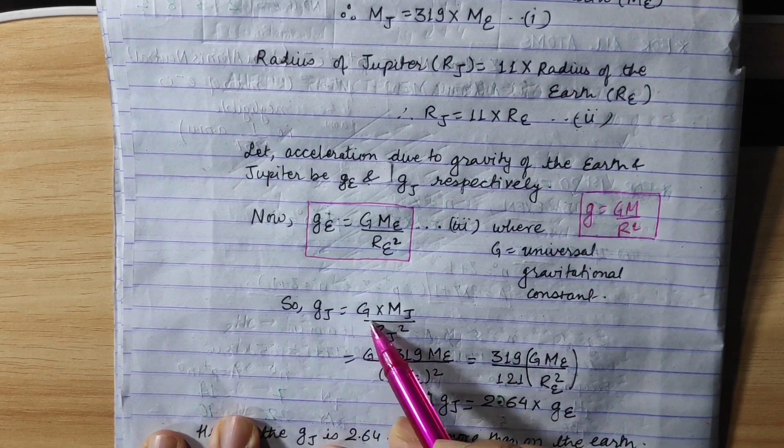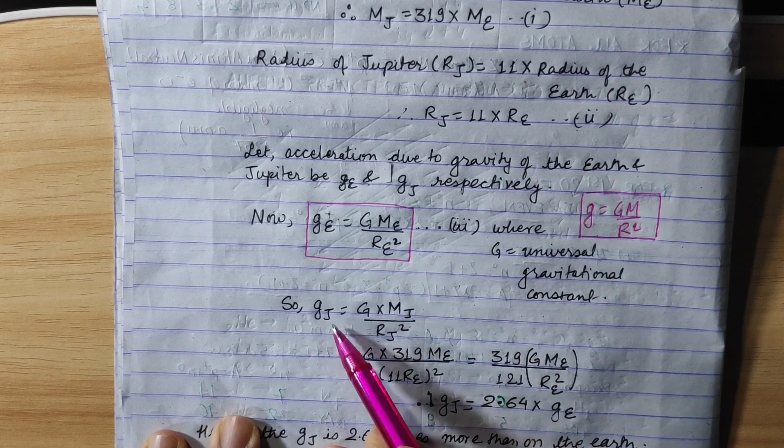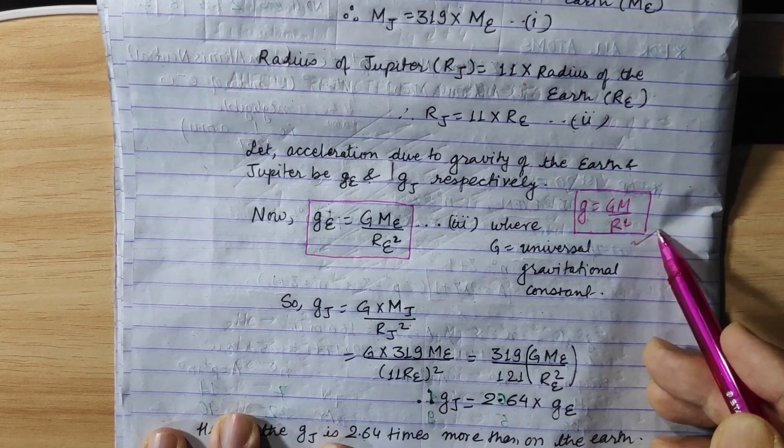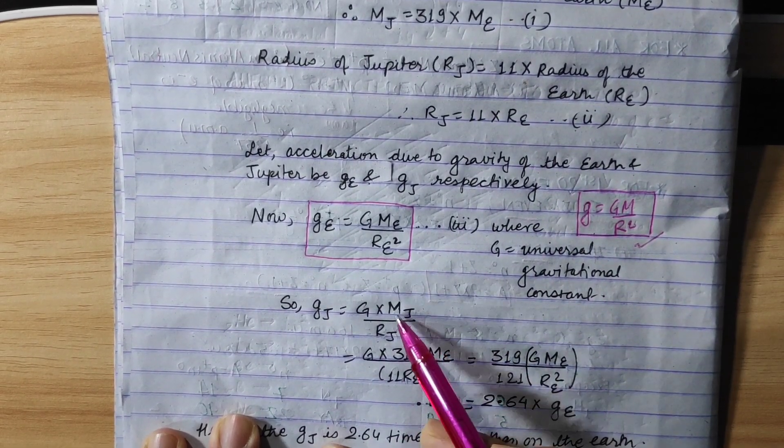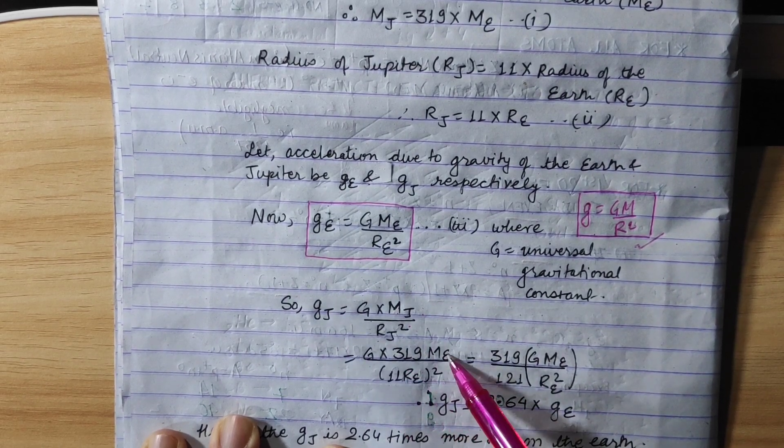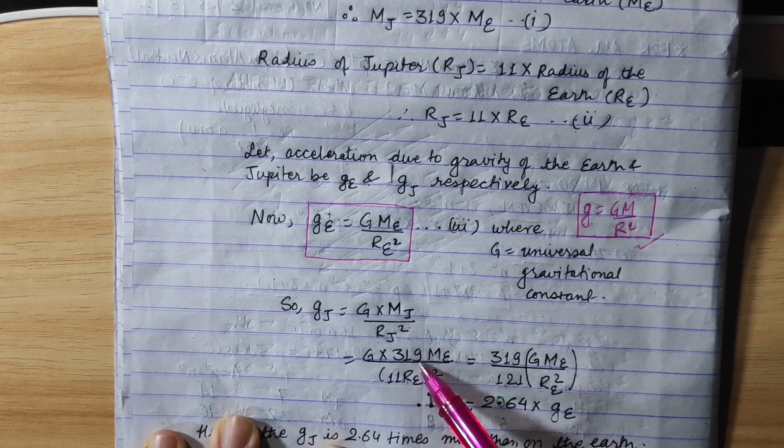In the case of Jupiter, Gj is equal to GMj upon Rj whole square. Now let's substitute: Mj is equal to 319 Me.